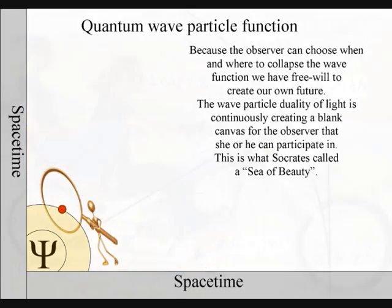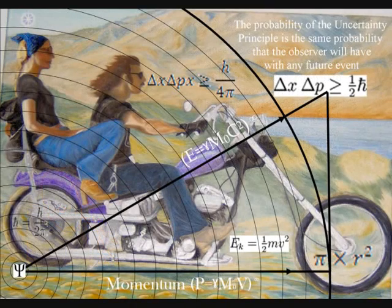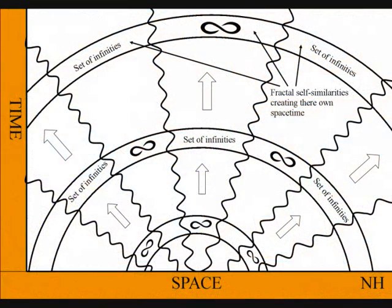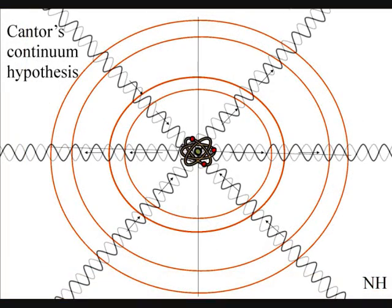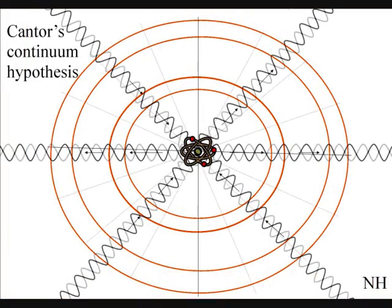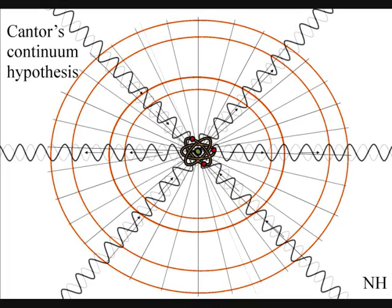That we have free will to create our own future. The reason why we can always divide infinity into sets of infinities is because of this continuous process of the wave particle function collapsing into new quantum particles of space and time.